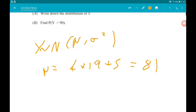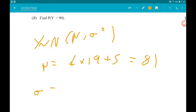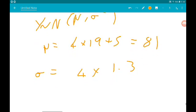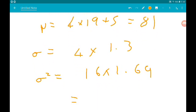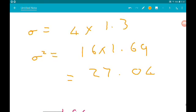So the standard deviation σ is going to be 4 times what it was above. So the standard deviation above was 1.3. So the variance is that squared. So it's going to be 16 times 1.69, and that gives us 27.04. So Y, that's a normal distribution with μ 81 and variance 27.04. Cool.